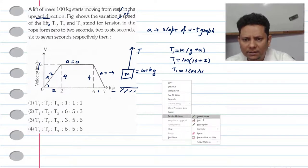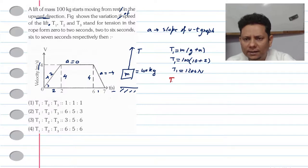Now, in the second case, we'll say T2 will be equal to mg, because acceleration is zero. So this will be equal to 100 multiplied by 10, which gives you 1000 newtons.